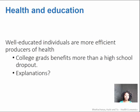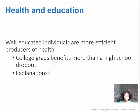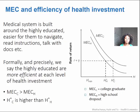First, health and education. Well-educated individuals are more efficient producers of their health, so college graduates might benefit more from an investment in health than a person with a high school diploma or without a diploma. Essentially, the medical system in the United States is built for and by highly educated individuals. It's easier for them to navigate that system, to read instructions, to talk with their physicians, to have their needs heard and met.